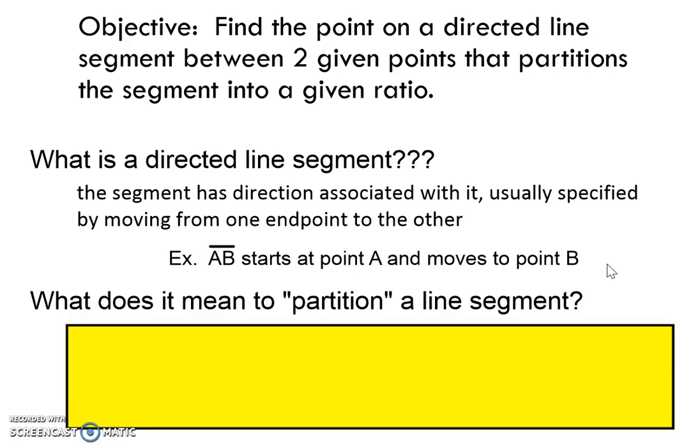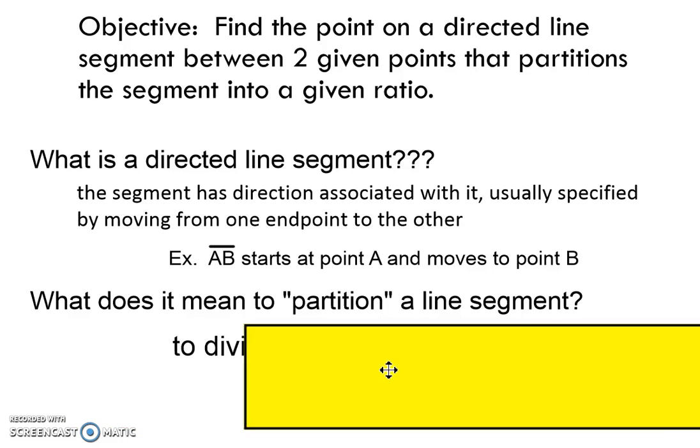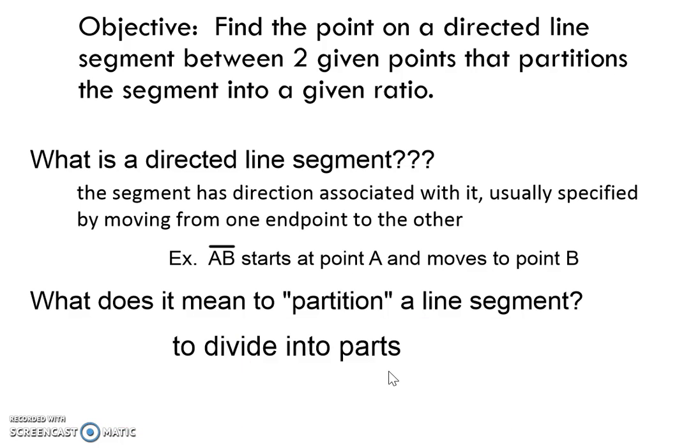To partition a segment means dividing that segment into parts according to a given ratio. So if I'm going two-thirds of the way, I'm dividing it into parts and the ratio of those parts is going to be two to one.